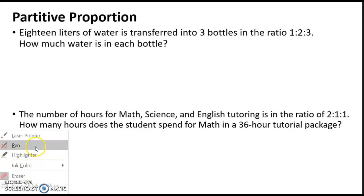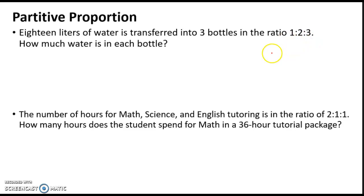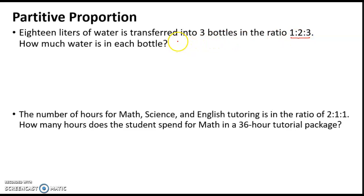Hello, our short tutorial for today is about partitive proportion. I have prepared two problems that we are going to solve. Example number one: 18 liters of water is transferred into three bottles in the ratio 1:2:3. How much water is in each bottle? The ratio 1:2:3 indicates the portions.